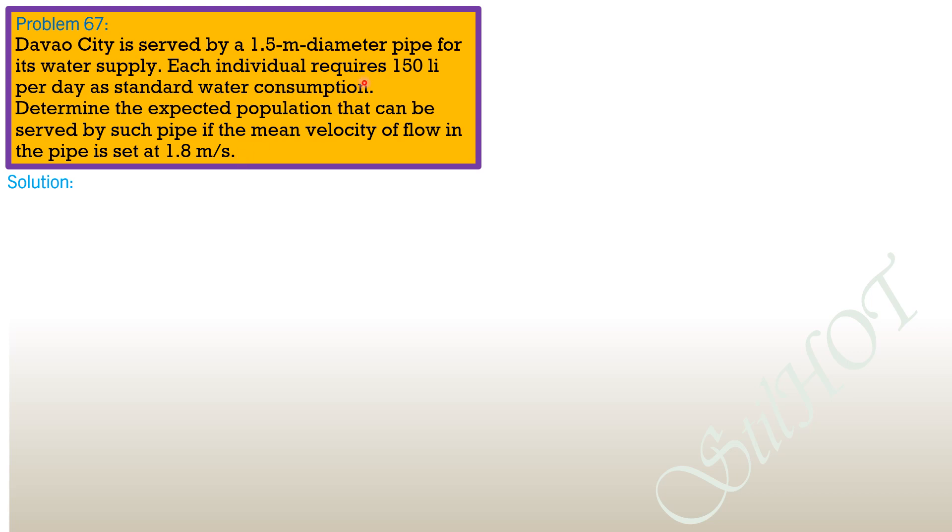For the solution, we compute the discharge in cubic meters per second and equate it to the discharge required by the total population N. Q equals area times mean velocity. The area is π/4 times diameter squared: (π/4)(1.5)² times mean velocity 1.8 meters per second.